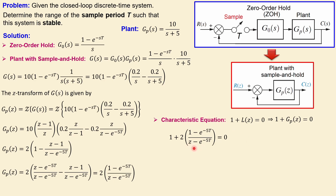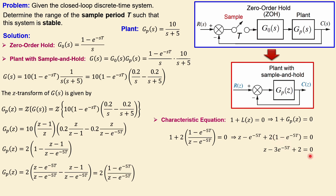We multiply both sides by (z - e^(-5T)). This gives us 2·(1 - e^(-5T)) for the expansion. Working out the parentheses yields -e^(-5T) - 2e^(-5T) = -3e^(-5T), plus 2, plus z. Isolating z, we get: z = 3·e^(-5T) - 2. This expression for z is important for determining the stability range.